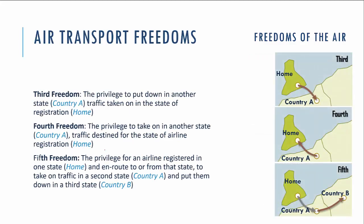The second contract, the Air Transport Agreement, gave three additional freedoms. The third freedom is the privilege to put down in another state traffic taken on in the state of registration — the home state. The fourth freedom is the privilege to take on in another state traffic destined for the airline's state of registration. The fifth freedom is the privilege for an airline registered in its home state to take traffic in a second state and put them down in a third state, en route to or from the home state.